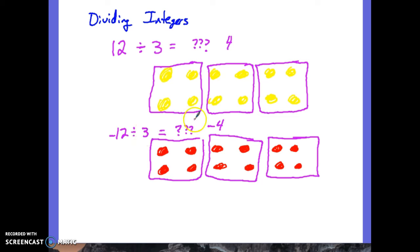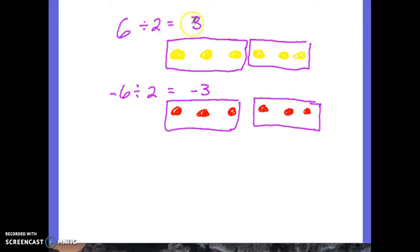Since we know that in multiplication, if there's one of them that's negative, the answer will be negative. It really doesn't matter which of these has the negative sign at that point. So 6 divided by 2 is 3. Negative 6 divided by 2 equals negative 3. We can also get to negative 6 by doing 3 times negative 2. So really if one of these is negative, we can just treat it as though the front one is and be okay.